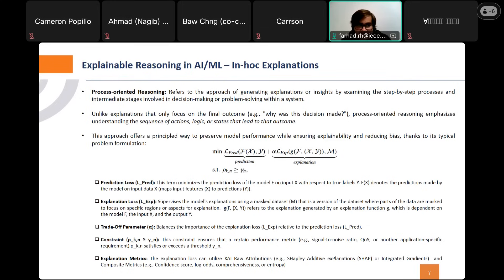And we have explanation loss that supervises the model's explanation using a masked dataset M, that this version of dataset exactly is a part of the data that are masked to focus on specific regions or aspects of explanation. We have also J(F,X,Y) refers to explanation generated by an explanation function J, which is dependent on the model F, the input X and the output Y.